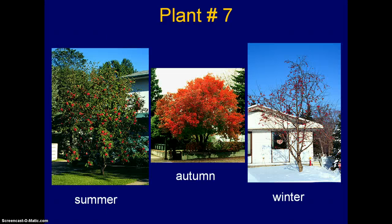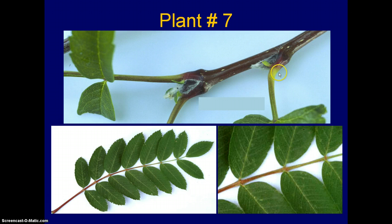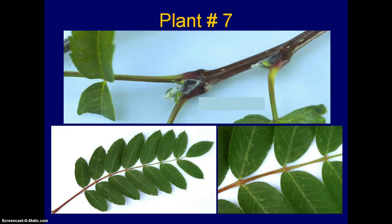Plant number seven: summer, autumn, and winter shots. Leaves and fruit. Details on the arrangement of leaves and details on the leaves themselves. To review: summer, autumn, winter, fruit and leaves, details on leaves and on leaf arrangement.